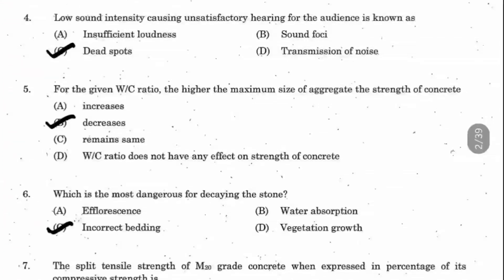When we increase the maximum size of aggregate while keeping the water-cement ratio fixed, the aggregate content increases but the cement content is not sufficient. As a result, the strength of the concrete will decrease.